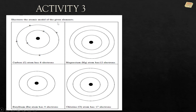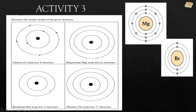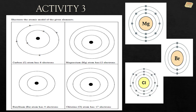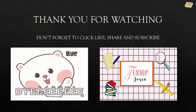For Activity 3, we illustrate the atomic model of given elements. Carbon has 6 electrons — we can draw these 6 electrons in the Bohr model. Magnesium has 12 electrons, beryllium has 4 electrons, and chlorine has 17 electrons. That's all for today — thank you for watching! Don't forget to like, share, and subscribe. Goodbye!